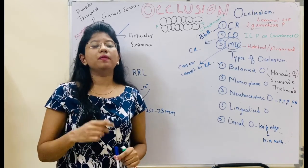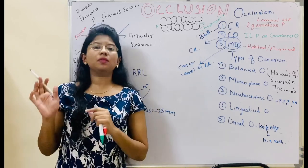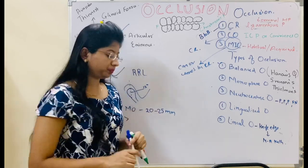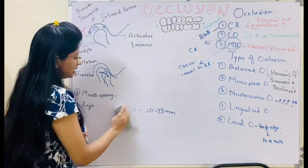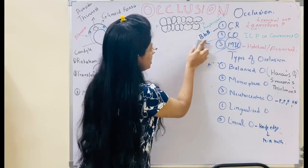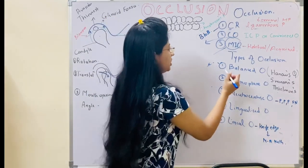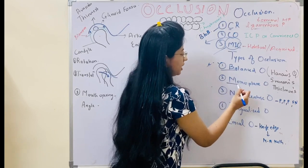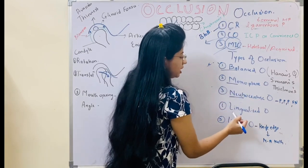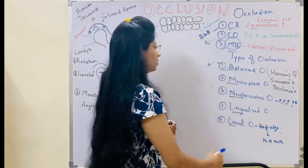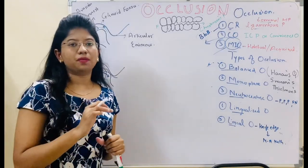Now we will move on to different types of occlusion. The occlusions are basically of different types: balanced occlusion, monoplane occlusion, neutrocentric, lingualized and lineal occlusion.